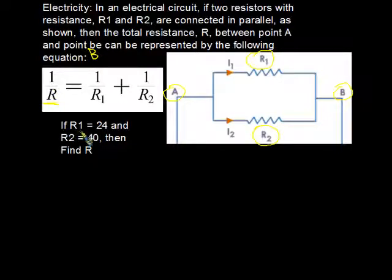We have variables and fractions. In this particular example, we are given that R1 equals 24 and R2 equals 40 and we are asked to then find R. So let's begin.